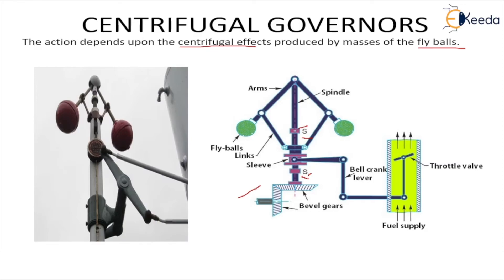When the load increases, speed decreases. The rotational speed of the spindle decreases, the centrifugal force on the balls decreases, and the balls lower down. The sleeve then moves downward, and through the bell crank lever, the throttle valve increases the fuel supply, thus controlling the output and maintaining the mean speed.